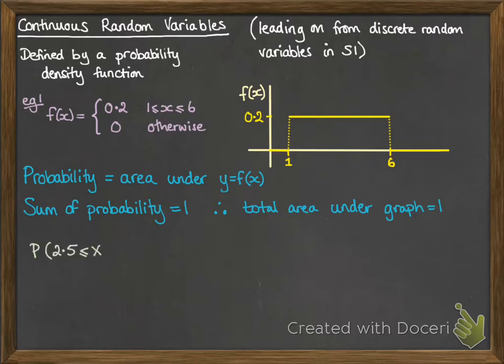So now if we want to work out a particular probability, we're working out the area under the curve between that range. For this one we're looking for x being between 2.5 and 4. So we are working out this area here under the curve. Now this one's a nice straightforward one, it's a rectangle. So we can just do 1.5 times the 0.2 height, and we get our probability of 0.3.